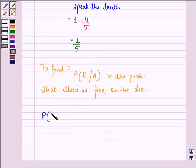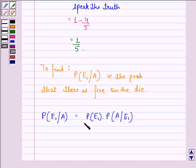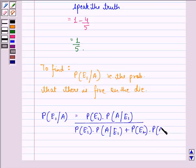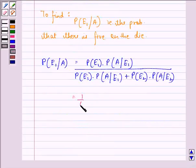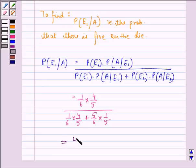So, we have probability E1 when A is given is equal to probability E1 into probability A upon E1 divided by probability E1 into probability A upon E1 plus probability of E2 into probability A upon E2. That is equal to 1 by 6 into 4 by 5 divided by 1 by 6 into 4 by 5 plus 5 by 6 into 1 by 5, and that is equal to 4 by 9.